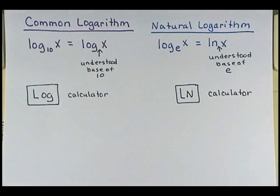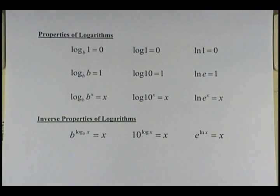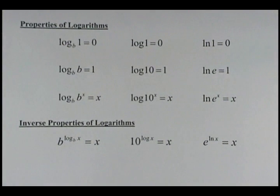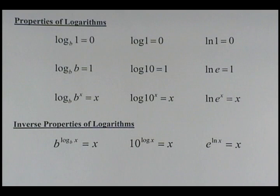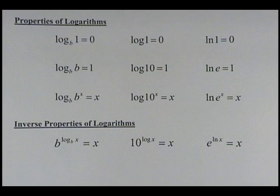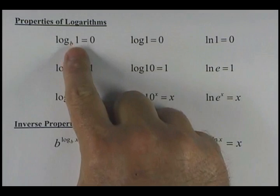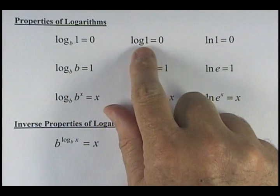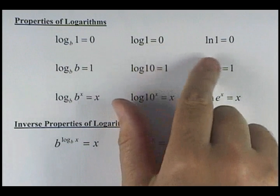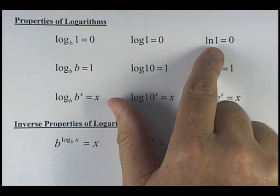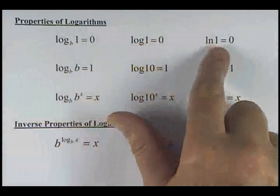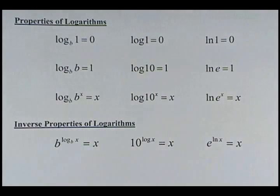Now your properties of logarithms — we'll cover a few here and get more later. Any time you take the log of 1, regardless of what the base is, it's always going to equal zero. The log of 1 will always be zero. When you take the log of something and it's the same as your base — log base b of b equals 1. So log base 10 of 10 is 1, and the natural log of e is 1.